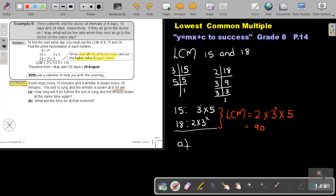So, let's look at number A. How long will it be before the bell is rang and the whistle blown at the same time? It's 90 minutes. Or, I can take it as 1 hour. An hour is 60 minutes. So, 1 hour and 30 minutes.